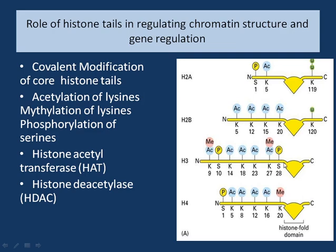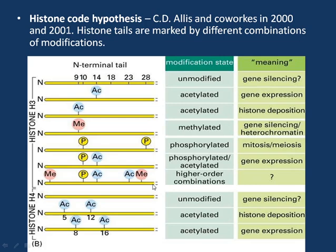These modifications of the N-terminal tails of the histone proteins play a very important role in further chromatin structure and regulation of gene expression. There are two enzymes in the nucleus: histone acetyltransferase, which causes acetylation, and histone deacetylase, which causes deacetylation of the amino acids present on the end tails of the histone protein. The histone code hypothesis was given by Jenuwein and co-workers in 2000-2001.